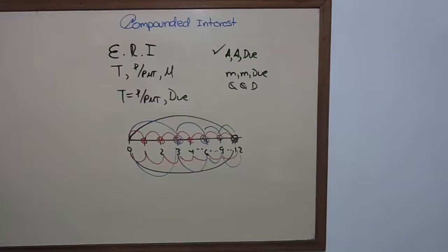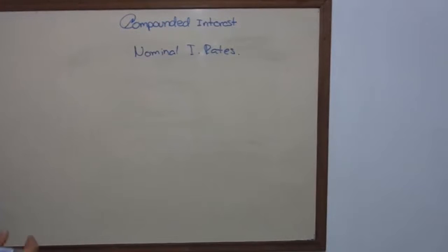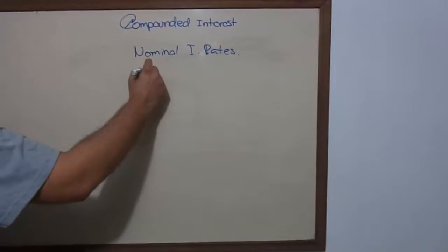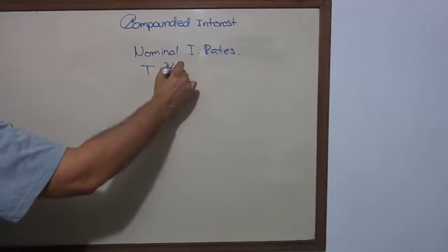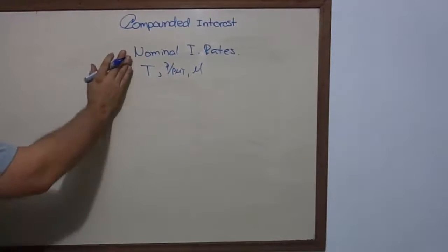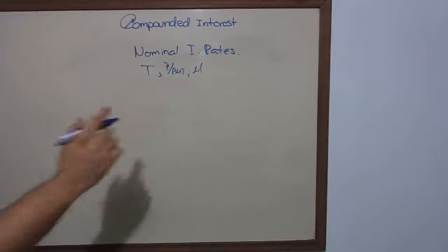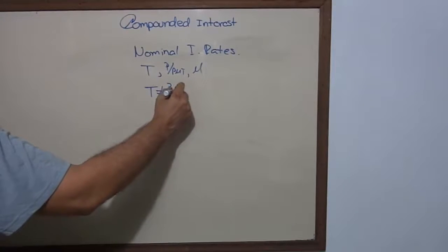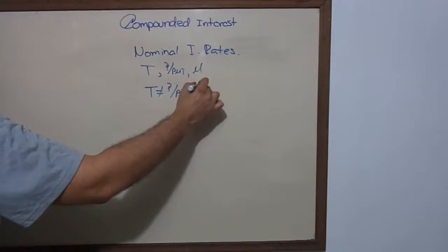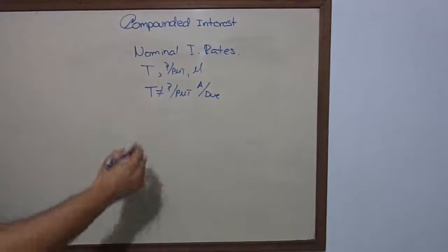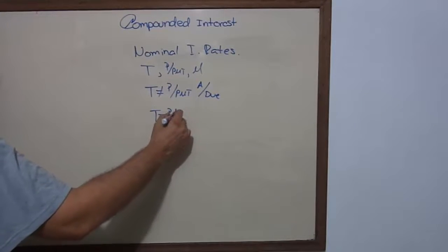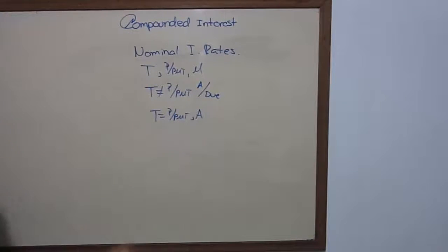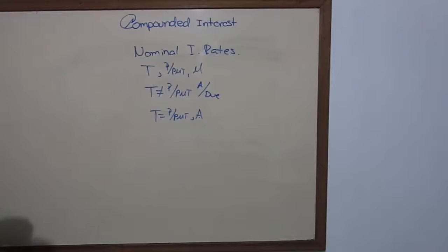Now let's talk about nominal interest rates. Just like the effective rate, this rate has time, period of payment, and moment. But it is called a nominal rate of interest if the time is different than the period of payment, and the moment could be in advance or due. And if the time is equal to the period of payment, the moment has to be in advance, because otherwise it's going to be effective. We're going to talk about this type of rate in future videos, because they're very interesting and very useful, even though sometimes we don't appreciate them.